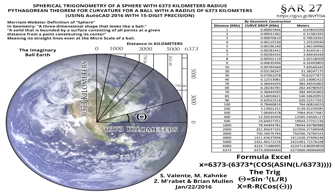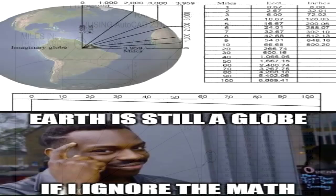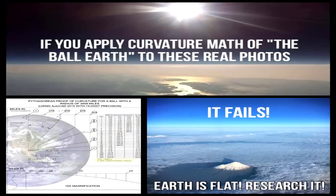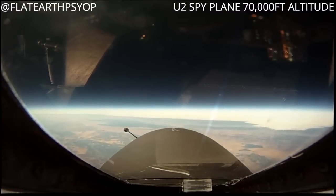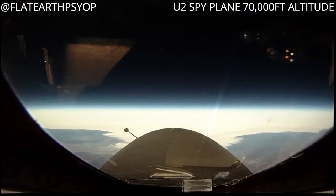Based on the curvature math for a globe of given proportions, a small amount of curve should already be visible to the naked eye, even at sea level. After just one mile, there would be eight inches of curvature, increasing exponentially so that after two miles there would be thirty-two inches, and after three miles there would be an entire seventy-two inches of Earth's curvature necessarily visible on the horizon. The fact of the matter is, however, that this supposed exponential curvature drop is not visible or measurable from any altitude whatsoever.